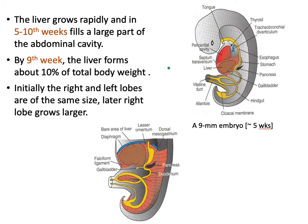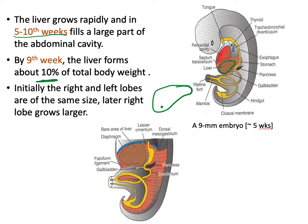With further development, the liver grows rapidly between the fifth and tenth weeks and fills a large part of the abdominal cavity. By the ninth week, the liver forms around 10 percent of total body weight. Initially the right and left lobes are the same size, but later the right lobe grows larger.